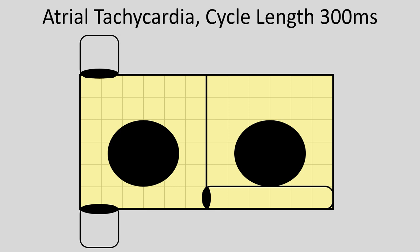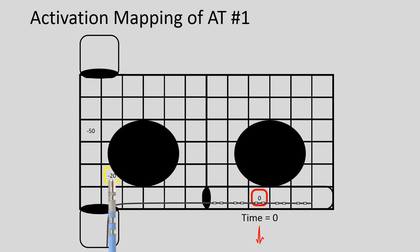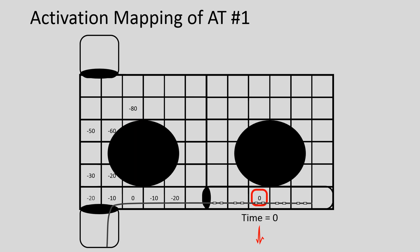Let's start with an atrial tachycardia with a cycle length of 300 milliseconds. We put in a coronary sinus catheter and use the 5-6 pair of electrodes as our reference — our red dot, our time zero. We put our mapping catheter up into the right atrium from the inferior vena cava and sample the electrogram at this spot. Timing is minus 50 milliseconds. We move to another location: minus 20. Another: minus 80, and so on. Little by little, pixel by pixel, we create an activation map of the right atrium.